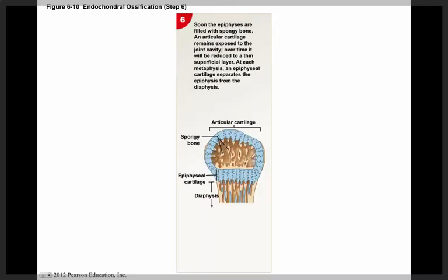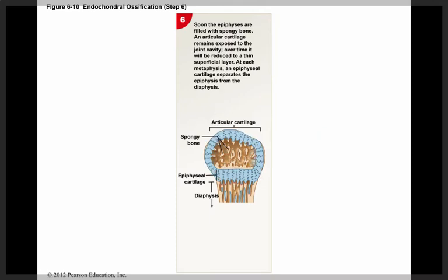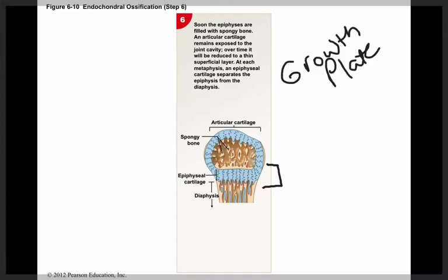The secondary ossification centers are found in the epiphyses of the bone. The epiphyses become completely filled with spongy bone. Over time, the articular cartilage surrounding the epiphyses is reduced to a very thin superficial layer; it will all be converted to a cortex of bone, except for an area near the joint that remains as articular cartilage to provide a smooth surface for articulation and reduce wearing down of the joint. There is also the epiphyseal cartilage, otherwise known as the growth plate. In the diaphysis, osteoblasts form new bone and osteoclasts break it down, while hyaline cartilage chondrocytes in the epiphyseal cartilage continue to proliferate and create more cartilage, making it longer.